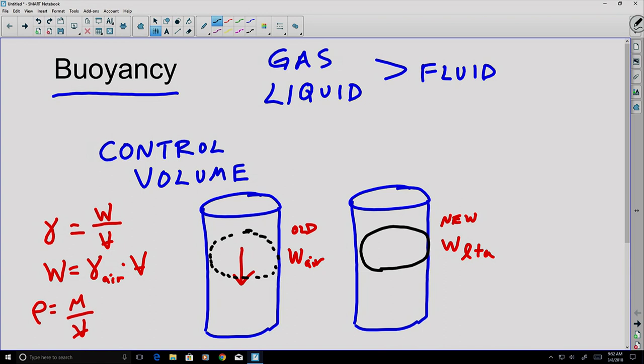And we'll go ahead and let that be the volume that we're considering in both places. So now if we're interested in determining how much the weight changes between these two control volumes, before and after, we're going to record that as the change in weight is the new weight, or the weight lighter than air, minus the old weight, which is the weight of the air that was there before.